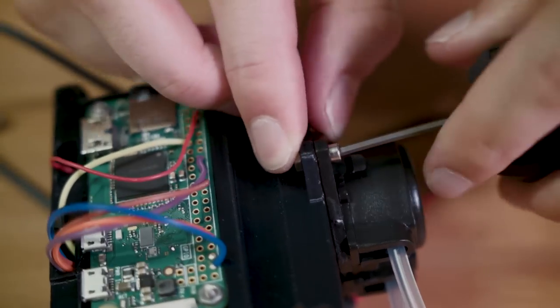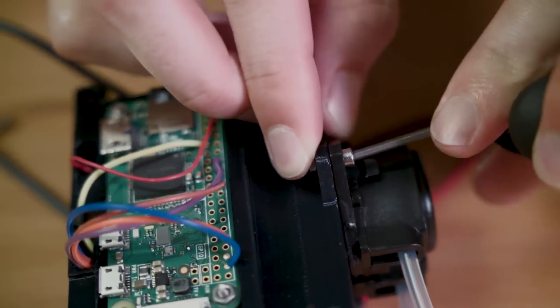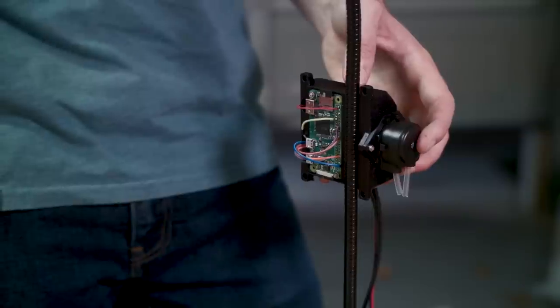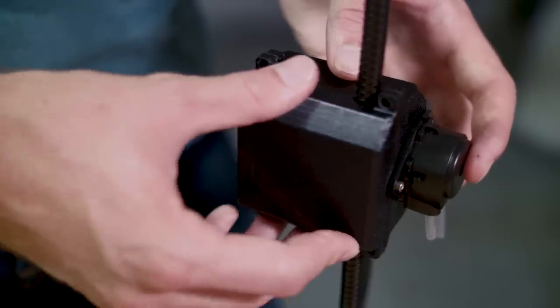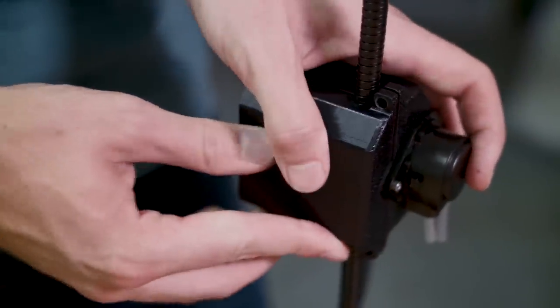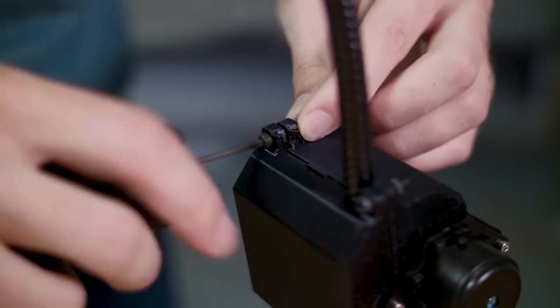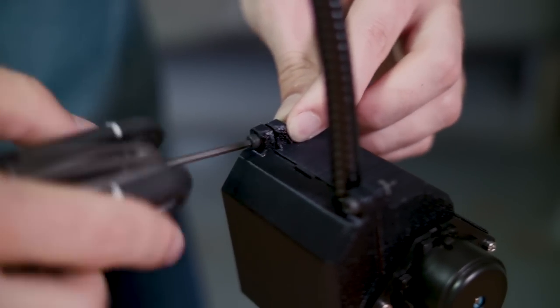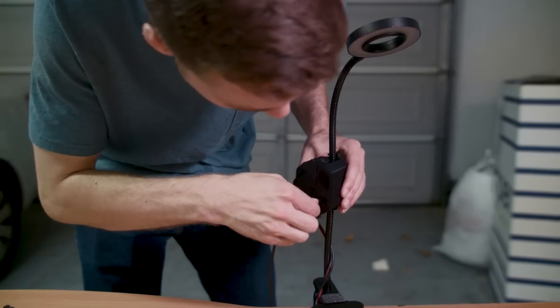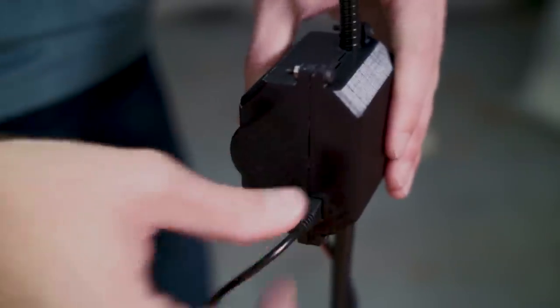We also used some 2.5 millimeter screws to attach the pump to the side of the case. We then reattached the case to the stem of the LED grow light with a few longer 4 millimeter screws. There's a nice slot on the side of the case for the Raspberry Pi power cable.